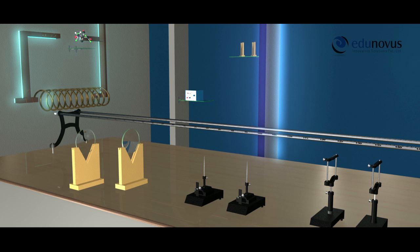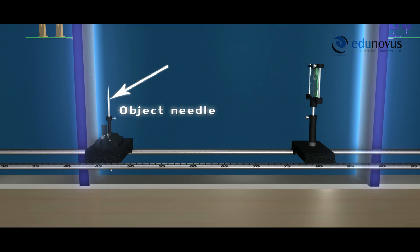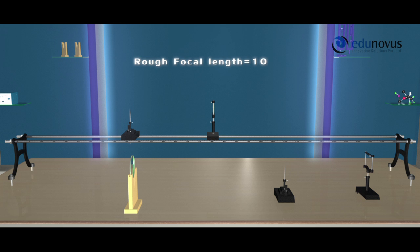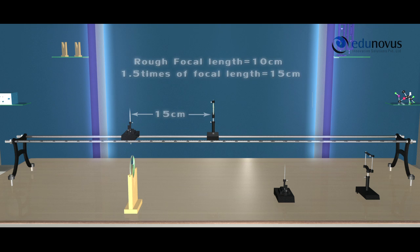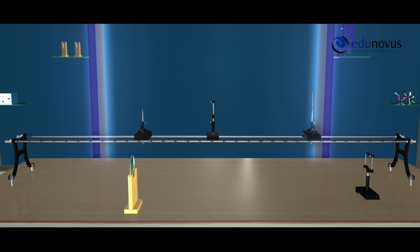Consider a convex lens and mount it on the optical bench at a convenient position. Place an object needle at 1.5 times the rough focal length of the given convex lens. By adjusting the position of the object needle, you will observe an inverted image of the object needle on the other side of the lens. Place the other needle on the optical bench as the image needle, and adjust its position until the image of the object needle coincides with the image needle.